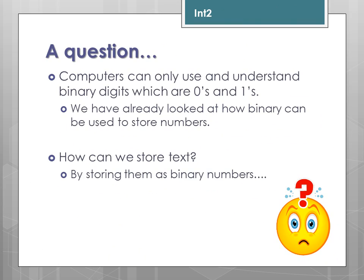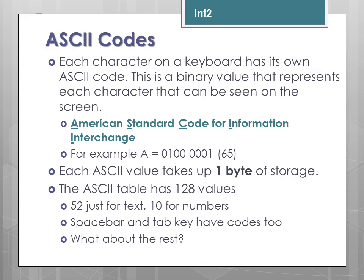We've already looked at how the computer can store binary numbers, both integers and real numbers, but we need to look at how it stores text. It basically stores text as binary numbers — ASCII codes. Each character on a keyboard has its own unique ASCII code. This is a basic binary value that tells the computer which key is being pressed.